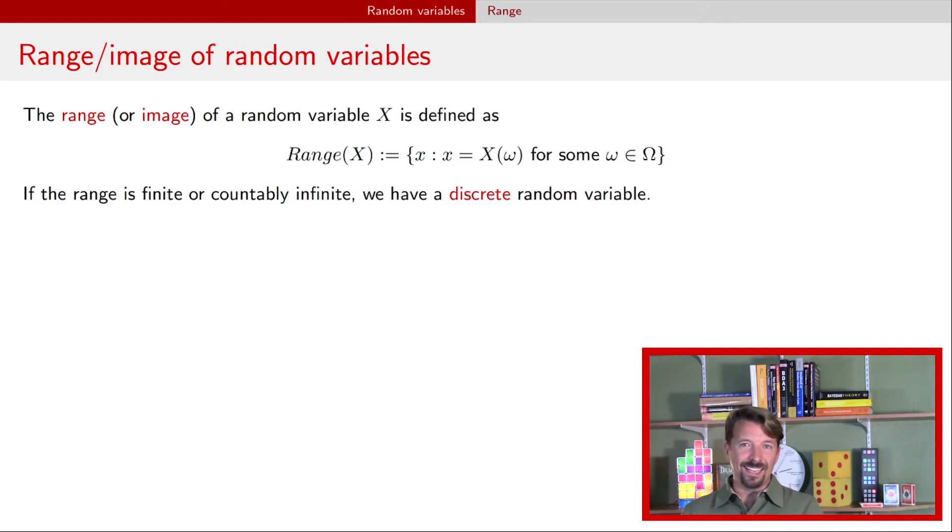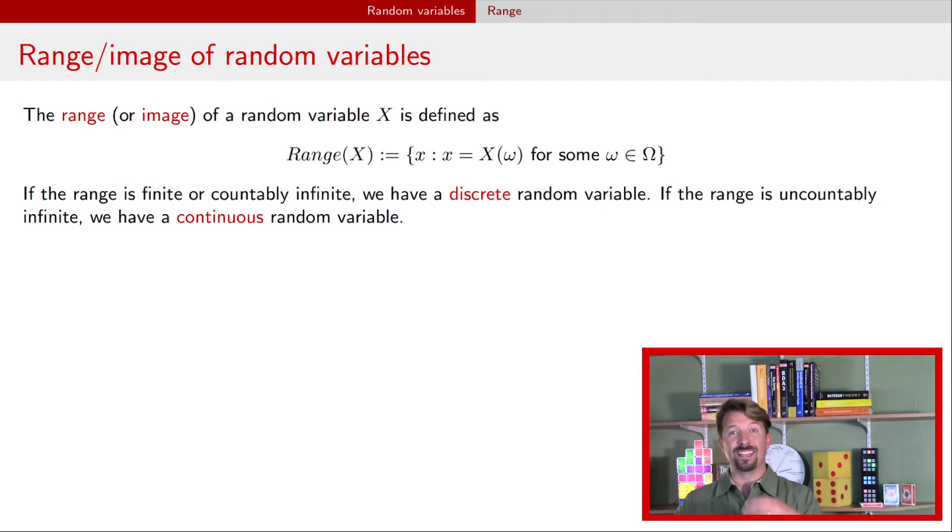The key here is that a discrete random variable has a finite or a countably infinite range, as opposed to a continuous random variable that has an uncountably infinite range. The easiest way to think about this is that if there's ever an interval that the random variable could be, then it's immediately a continuous random variable. If there's no interval, at least for everything we do, it will be a discrete random variable.